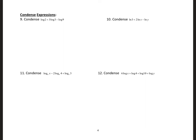Now we are told to condense, so we are doing the opposite. This is logarithm to base 10 — the common logarithm — so this is going to be log of 2, multiplied by 3 cubed, divided by 9. We can simplify: 3 cubed is 27, times 2 is 54, so we get log of 54 over 9. Simplifying further, 54 divided by 9 gives us logarithm of 6.